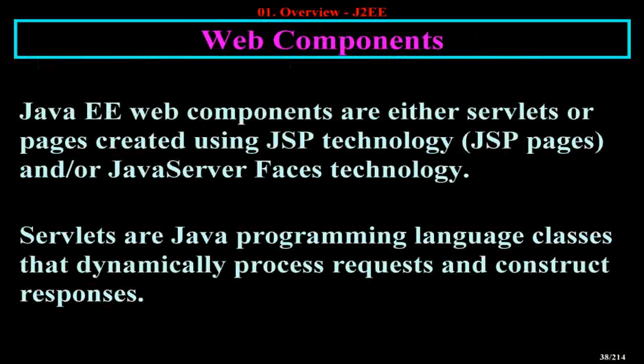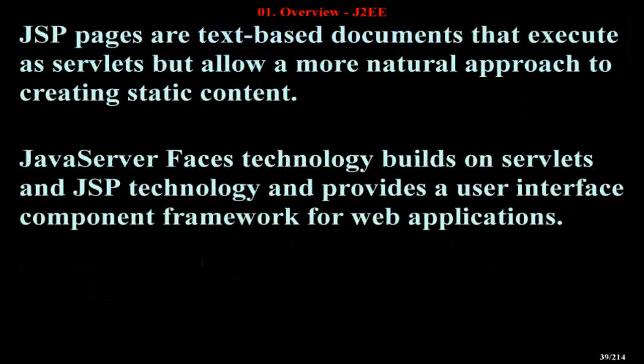Web Components. Java EE web components are either servlets or pages created using JSP technology, JSP pages, and/or JavaServer Faces technology. Servlets are Java programming language classes that dynamically process requests and construct responses. JSP pages are text-based documents that execute as servlets but allow a more natural approach to creating static content. JavaServer Faces technology builds on servlets and JSP technology and provides a user interface component framework for web applications.